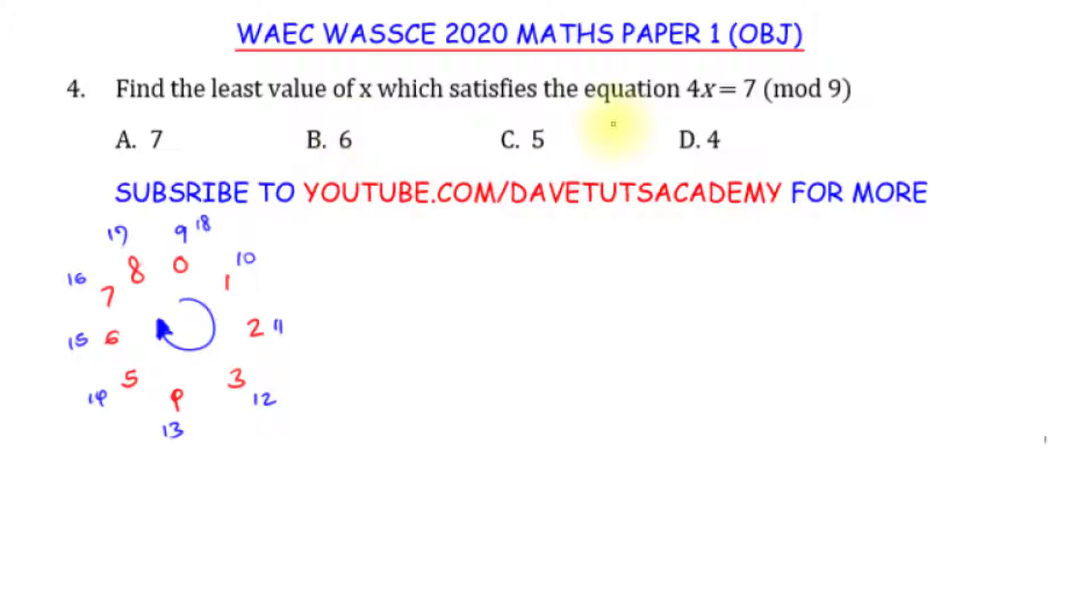Now the question here is that we have to find the least value of x which satisfies the equation 4x equals 7. This is actually what I want you to get. Now when we're talking about modulo 9, the ideal thing for you to do is to look at a division by 9. Consider division by 9.